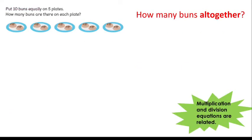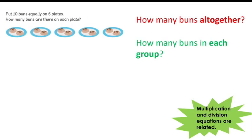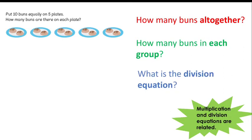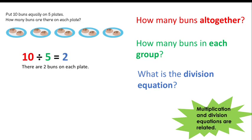This time we are sharing the 10 buns equally between the 5 plates. When we do this, there are still 2 buns in each group or on each plate. So what is the division equation? Have a go. This time the division equation is 10 divided by 5 equals 2, because there are 10 buns altogether and we have shared them between the 5 plates, which means there are 2 buns on each plate.